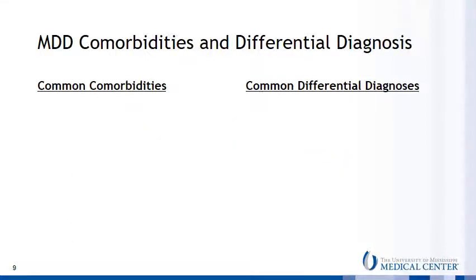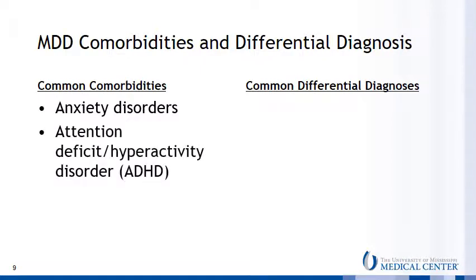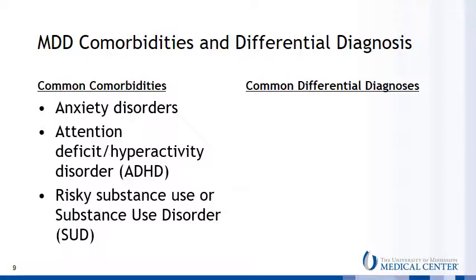There are a number of common psychiatric comorbidities that often accompany major depressive disorder. More than three-quarters of patients with MDD exhibit symptoms of an anxiety disorder at some point in their illness. Interestingly, although people with a primary diagnosis of an anxiety disorder often present with comorbid MDD, the rate is much lower — somewhere between 25 and 50 percent. Another common comorbidity is ADHD, and MDD is often accompanied by risky substance use or full-blown substance use disorders.